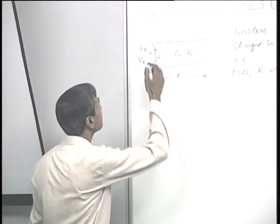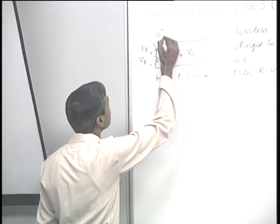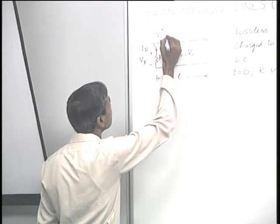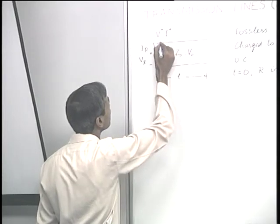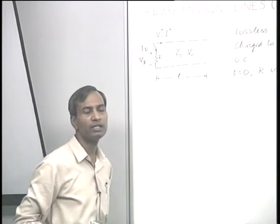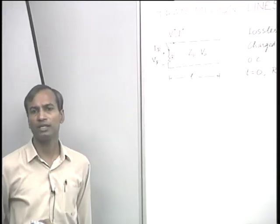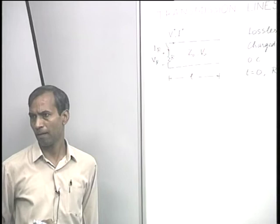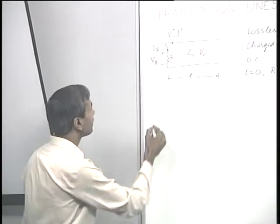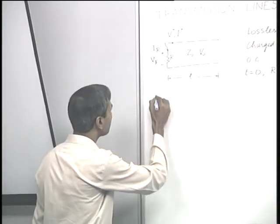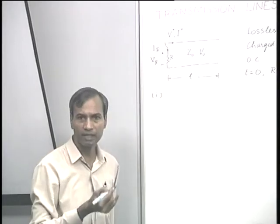Therefore, a wave with associated voltage V plus and current I plus will start flowing at T equal to 0. To find out the values of V plus and V R, we apply the appropriate circuit conditions.